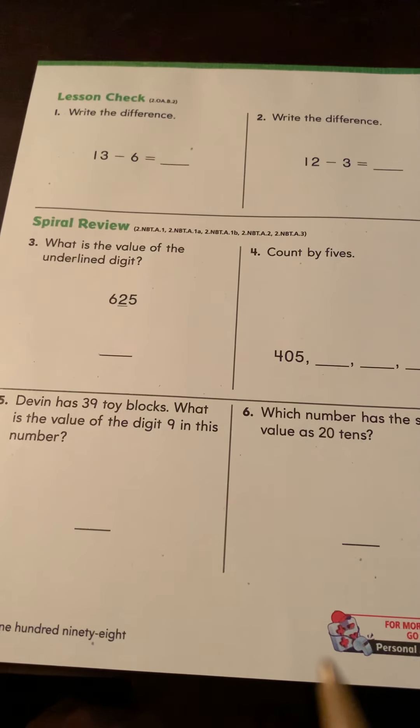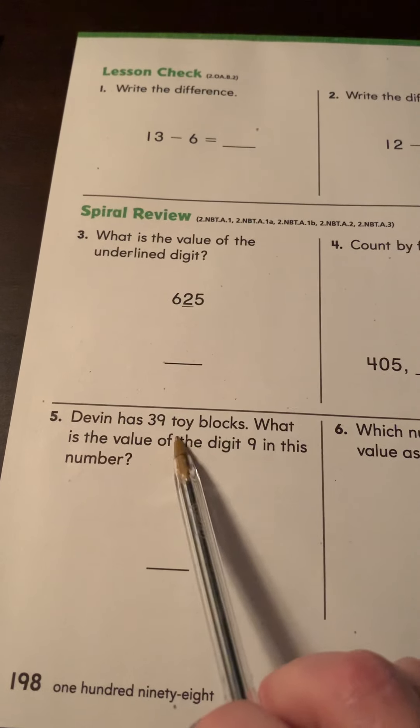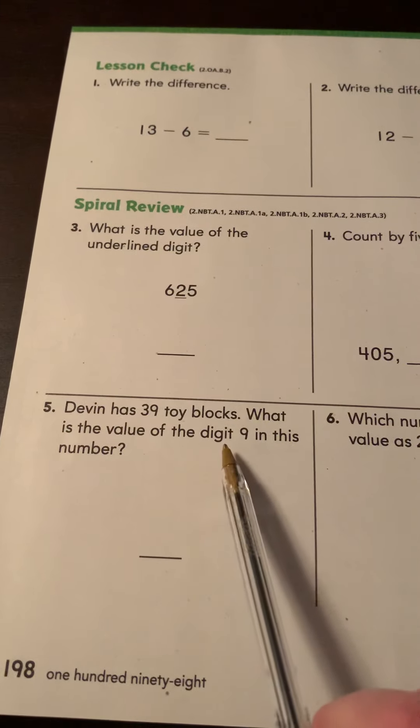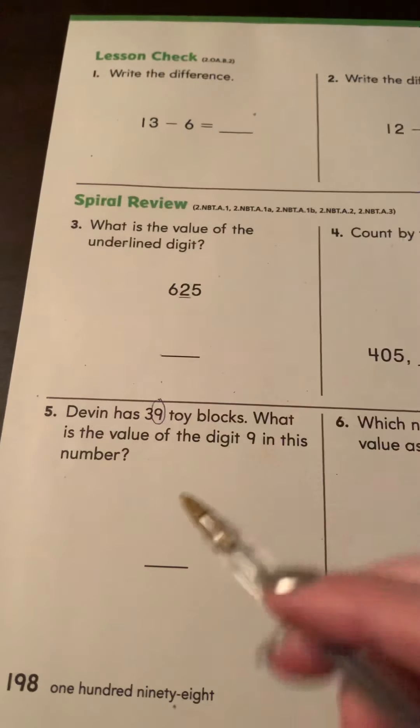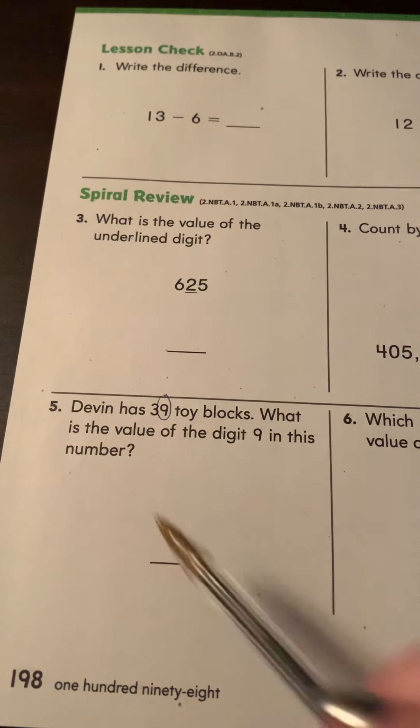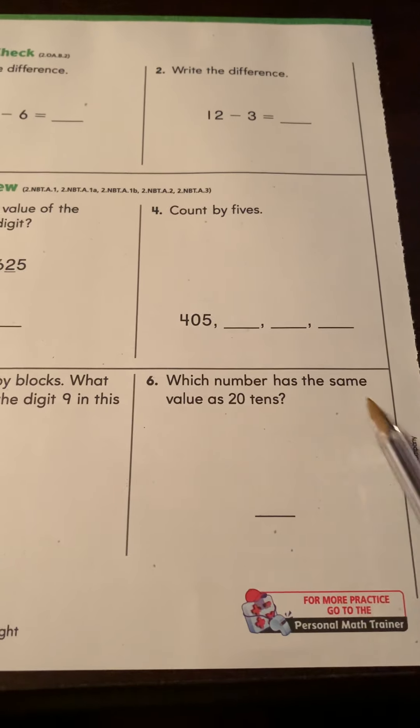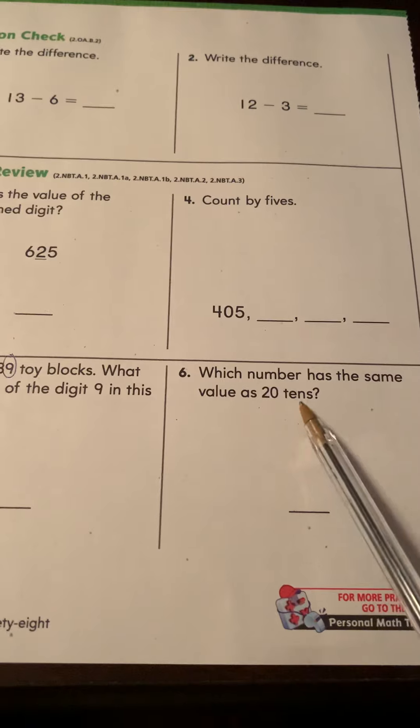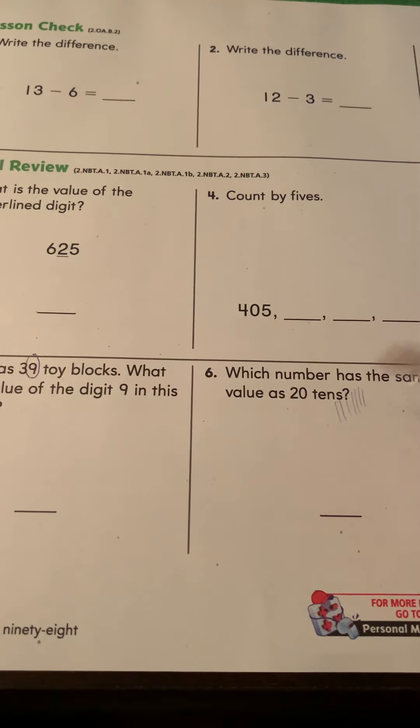And then on the back, these are all review. I think you got this. I'll read this one to you. Devin has 39 toy blocks. What is the total value of the digit nine in this number? They want to know just the value of the digit nine. And for this one, which number has the same value as 20 tens? 20 ten sticks. We call those french fries. 20 french fries.